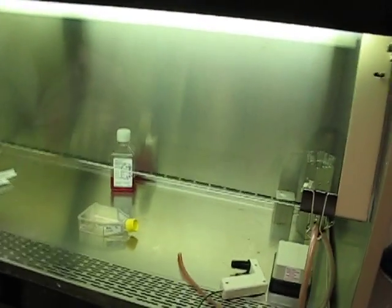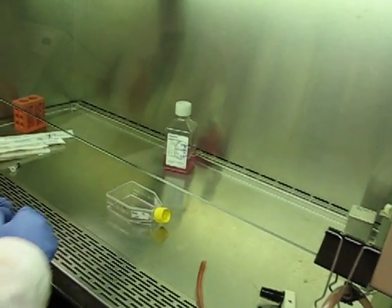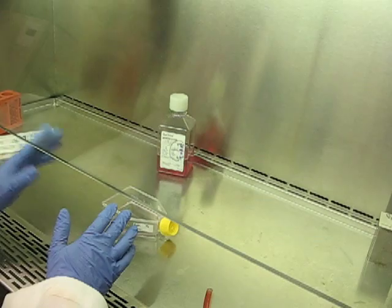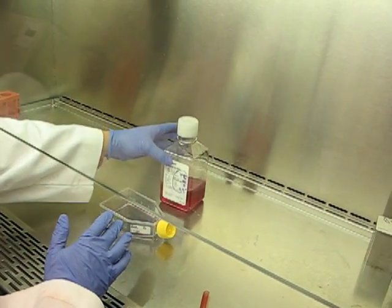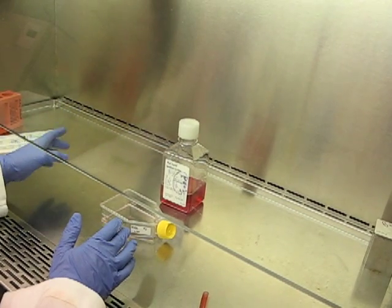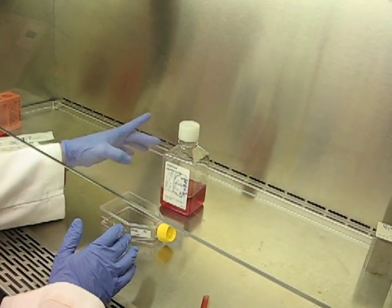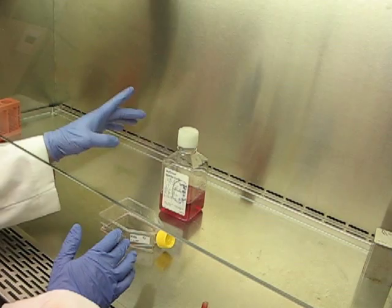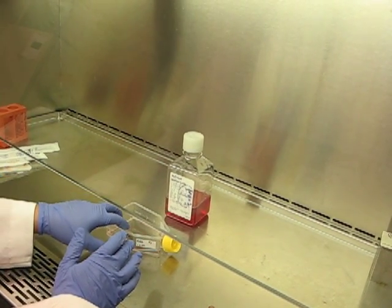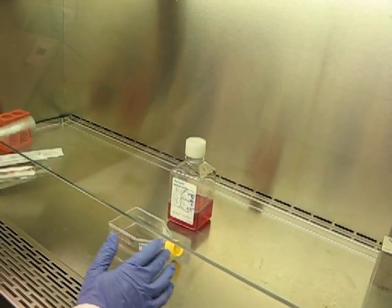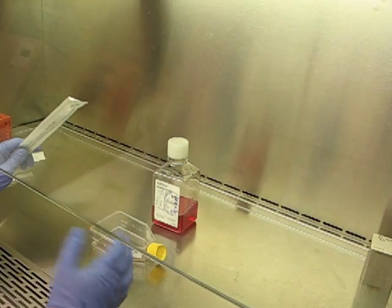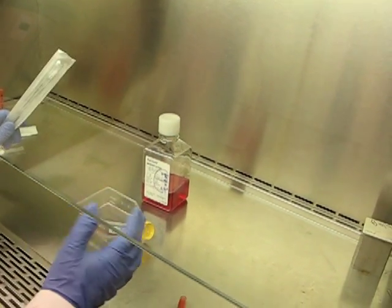Now trypsin, you have to neutralize, and you have to neutralize it with media that contains serum. This media here has FBS in it. You have to use an equal or greater amount of your media to neutralize the trypsin. So we have one and a half mils of trypsin in there.